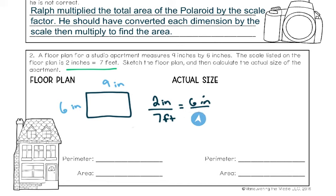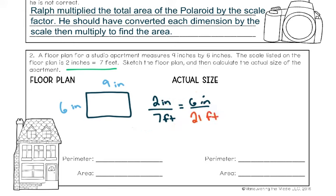On the bottom I don't have that dimension — I don't know how many feet it is in real life. That's why we write this as a fraction so we can solve using cross multiplication. We multiply the two numbers across from each other: 6 times 7, then divide by the number left, which is 2. I got 21 feet — that corresponds to the 6-inch side. Go ahead and draw the new rectangle for the actual apartment floor plan and label the width as 21 feet.